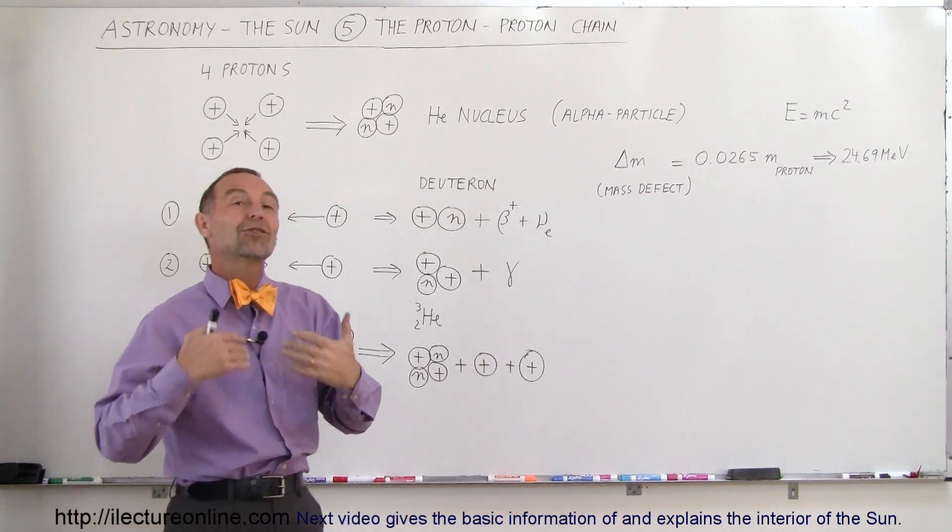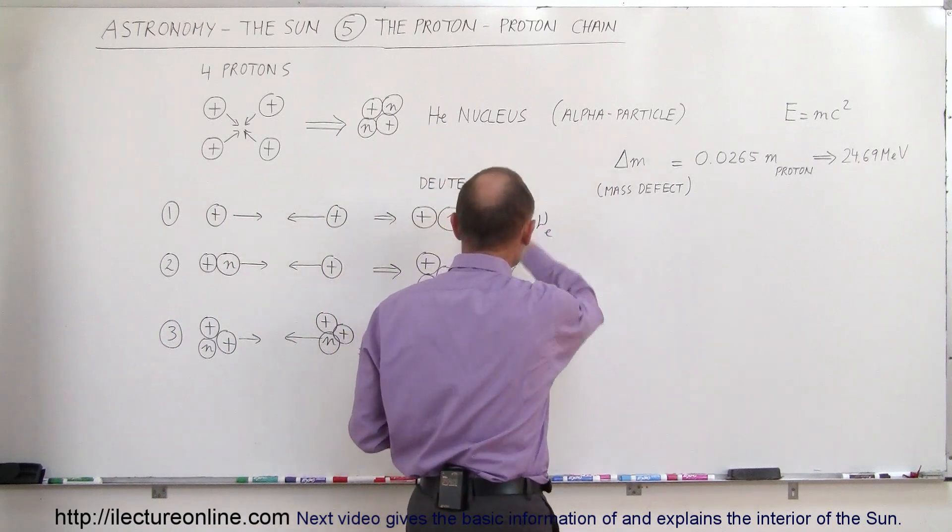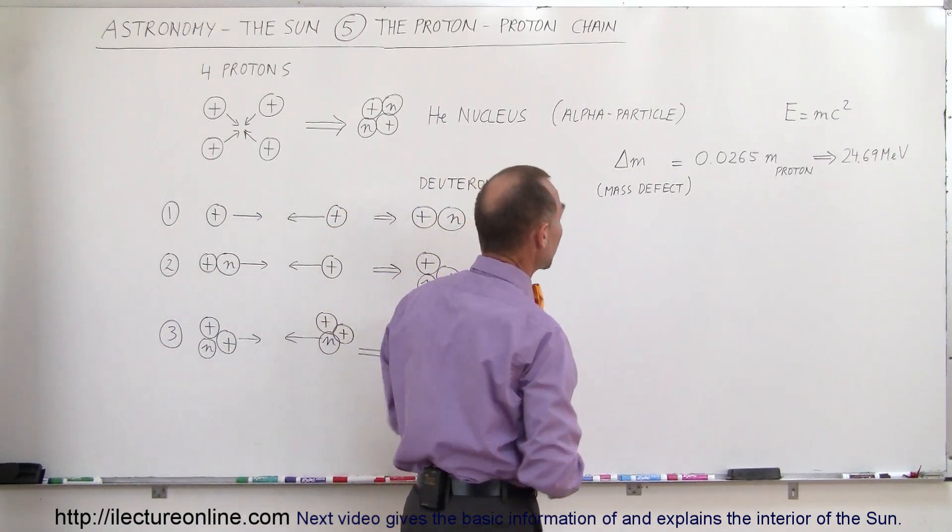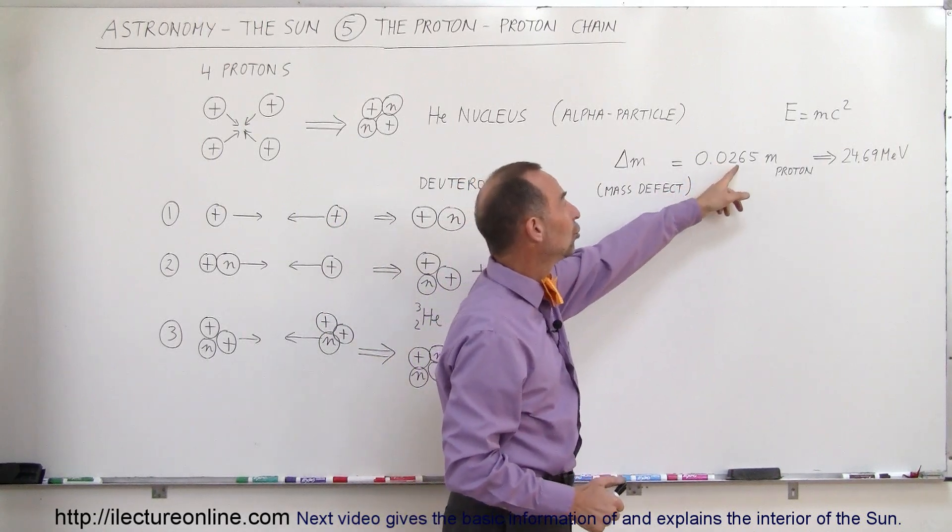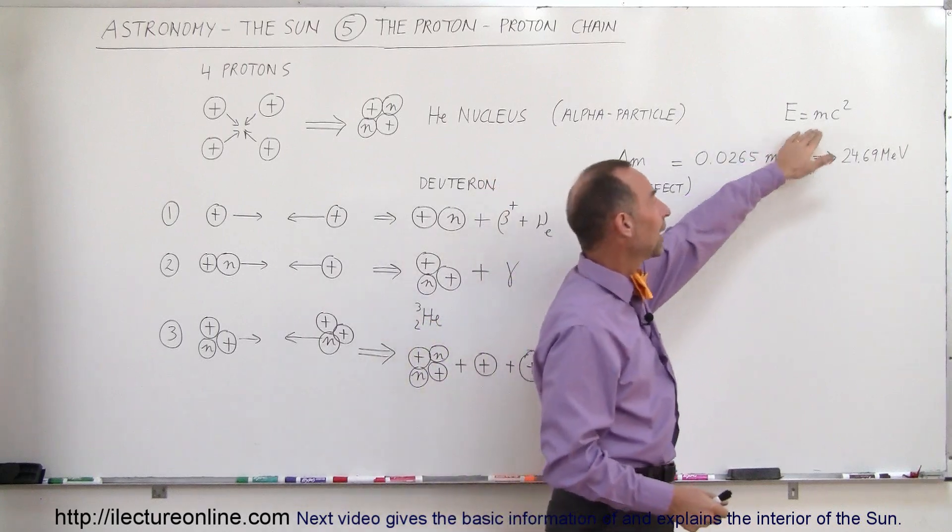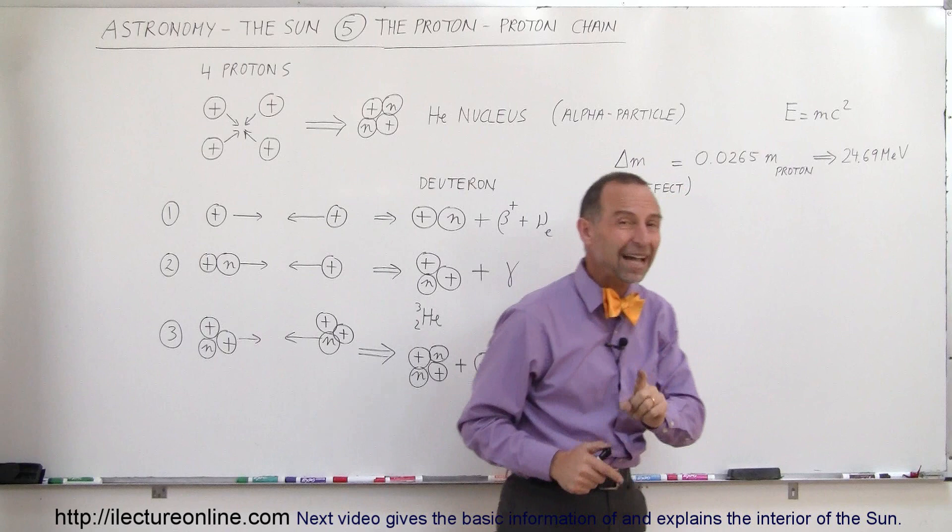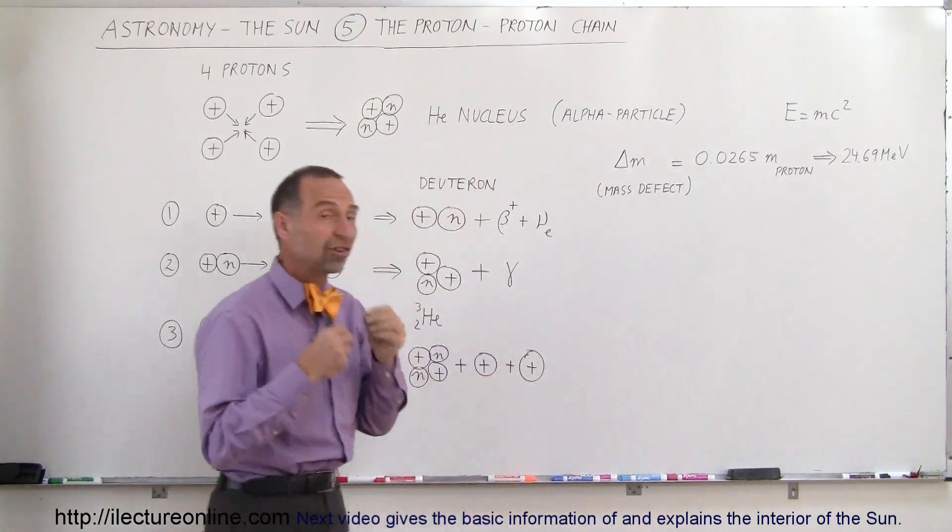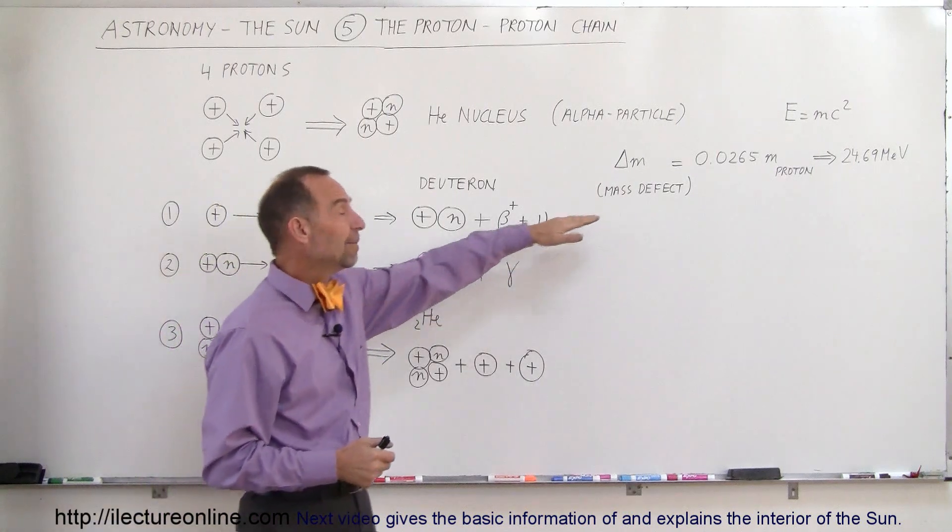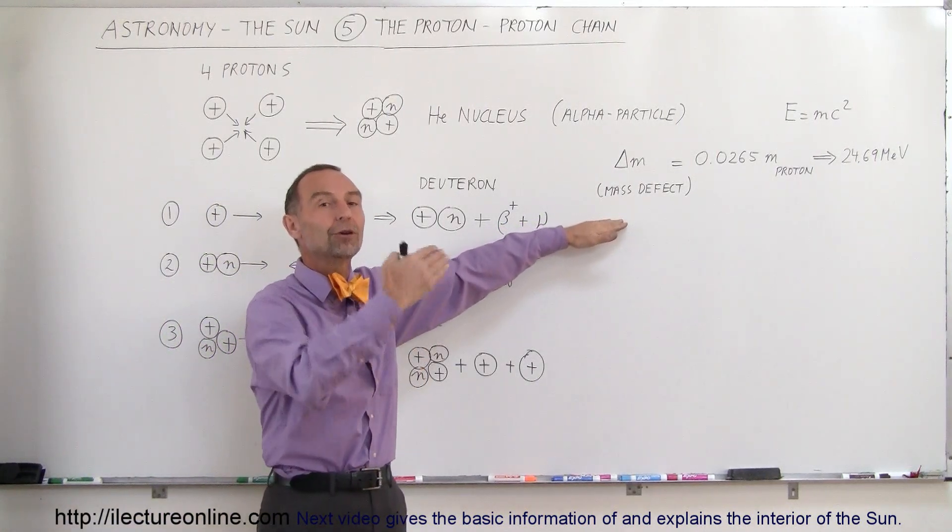How much matter does the sun convert to energy in this fashion? Well, for every one of these reactions, proton-proton chain reactions, the three steps in the proton-proton chain, 0.0265 times the mass of the proton is directly converted to energy. The total energy generated, 24.69 million electron volts, which is a lot of energy for this triple set of reactions. The missing mass is called the mass defect, which is then converted into energy.